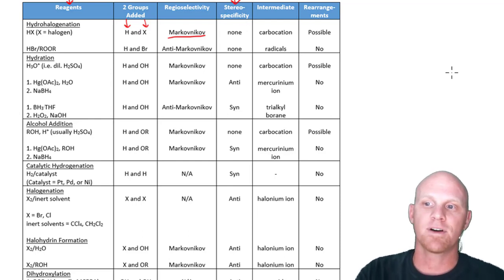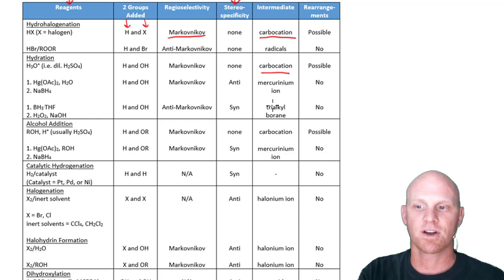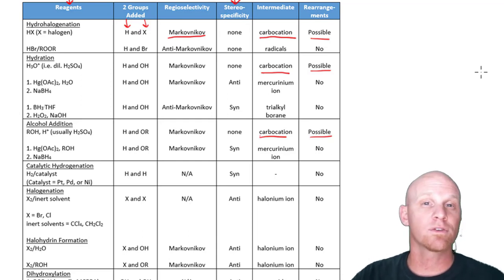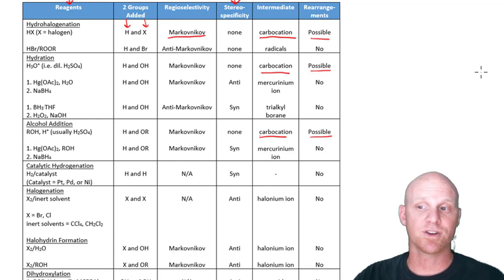So then I'm going to go through the intermediate. The reason I really wanted to put this intermediate here is I wanted you to see which three reactions involve a carbocation intermediate. And that's why those are the only three reactions where rearrangements are even possible. So if we're doing any one of those three reactions, we should draw the carbocation intermediate just to verify whether or not it's going to rearrange. For the rest of them, predicting the products would be pretty straightforward.